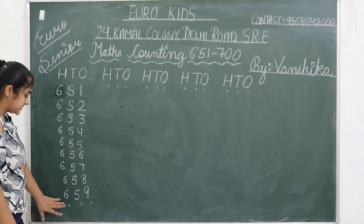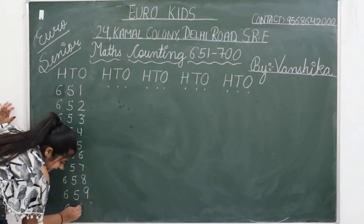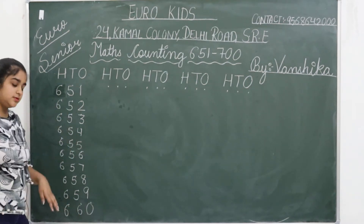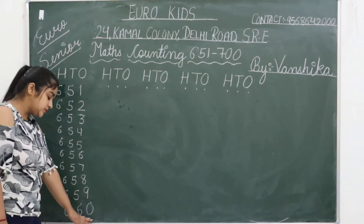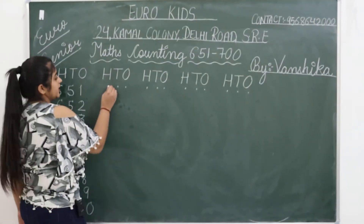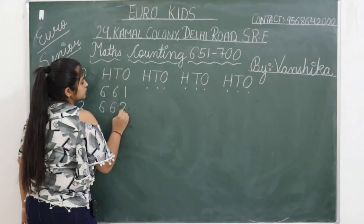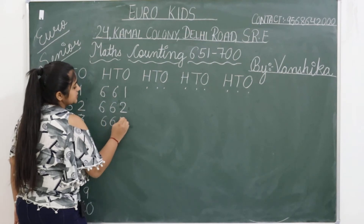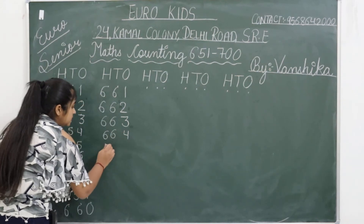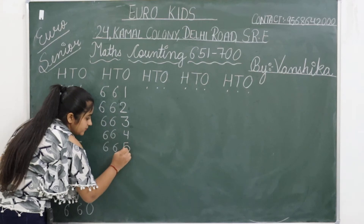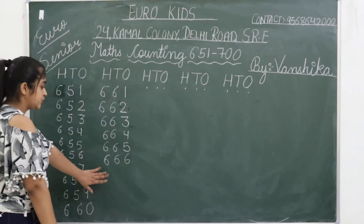Now what comes after 659? 660. You all have to write it — 660. Are you writing? You have to write nicely.